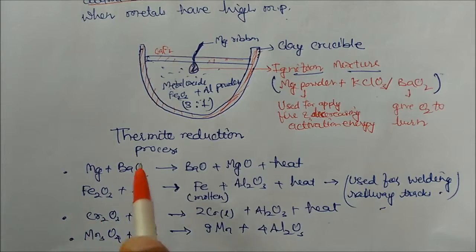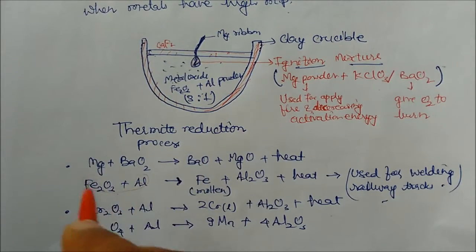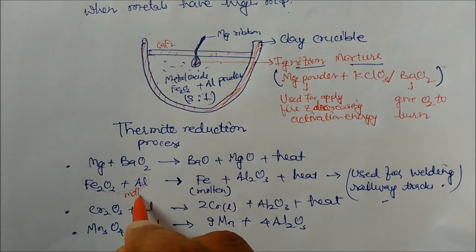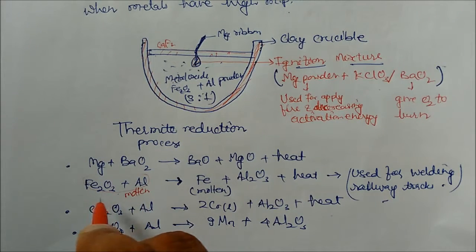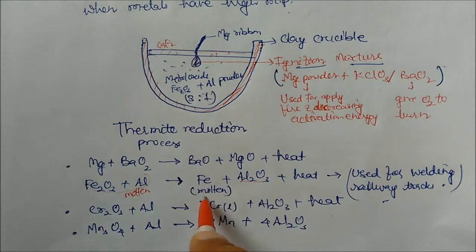And in this high temperature, this is a mixture. So aluminium plus Fe2O3, both will present in molten state. Now in molten state aluminium, it is very easy for the aluminium to extract oxygen from the iron. So it will react with oxygen.